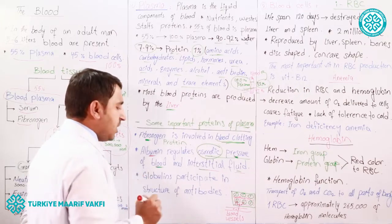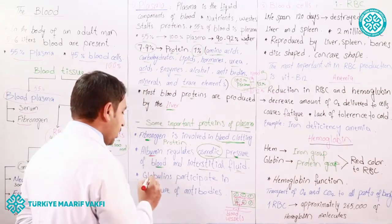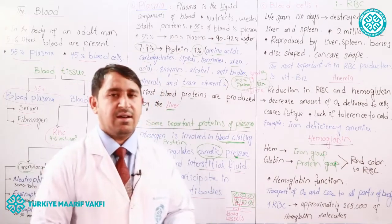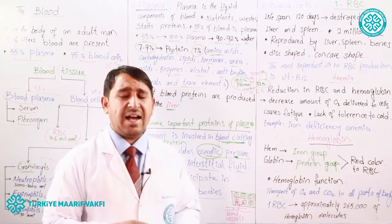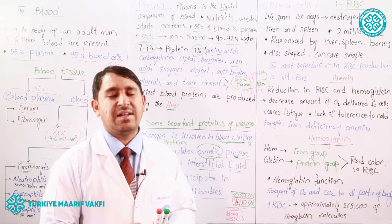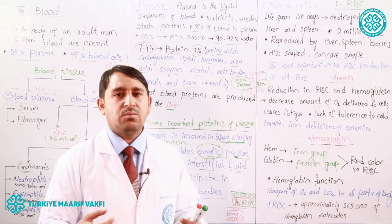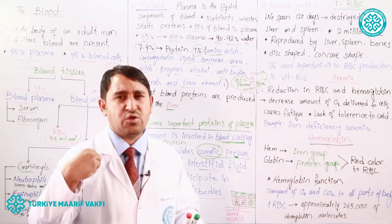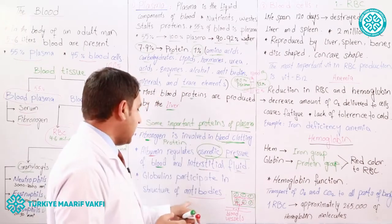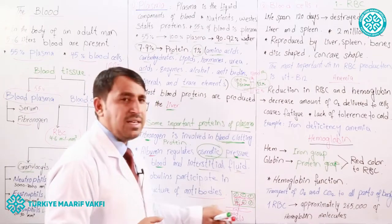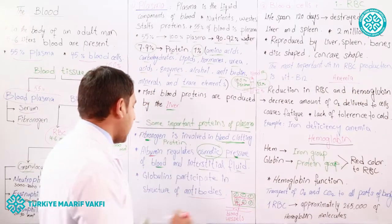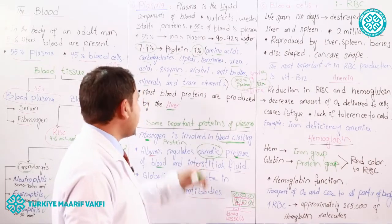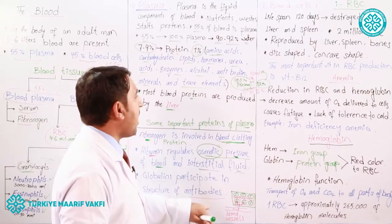The third type of protein in our blood plasma made by the liver is globulins. Globulins participate in the structure of antibodies. Antibodies are protein structures that fight against microbes or antigens — materials coming from outside our body that our body cannot recognize. Our body makes antibodies against these antigens, and these antibodies are made from globulin proteins.